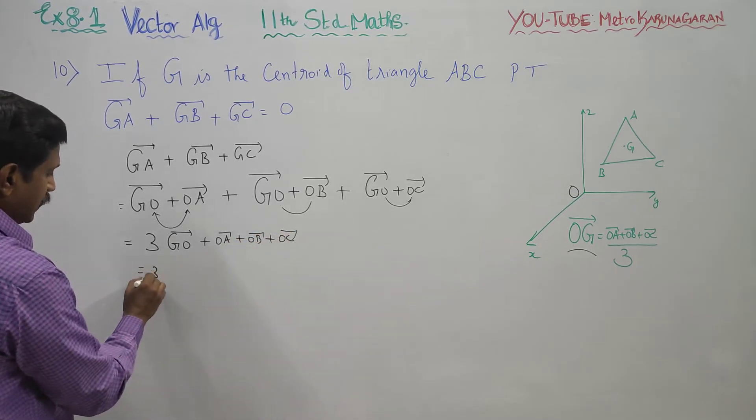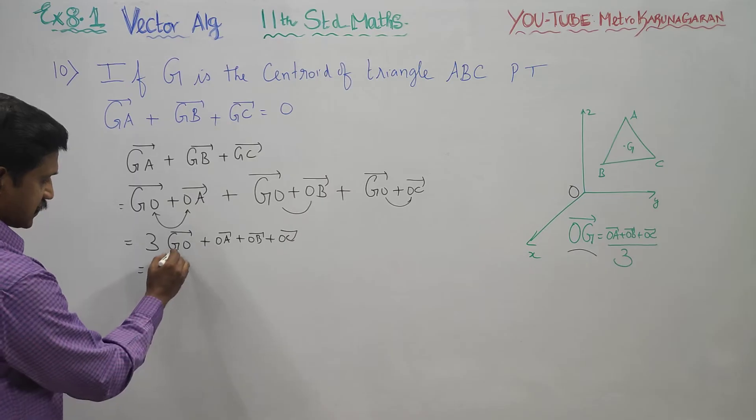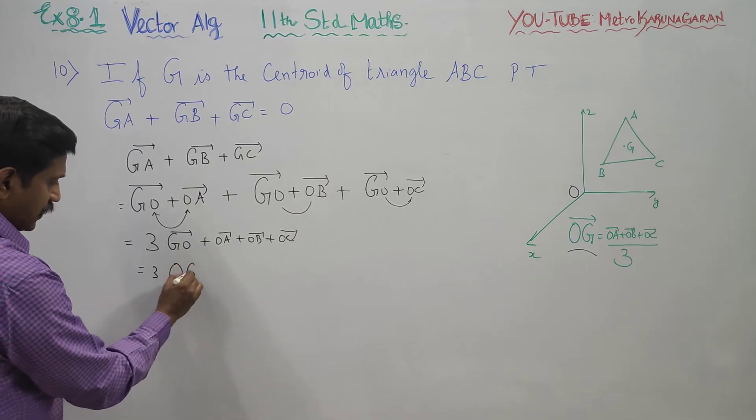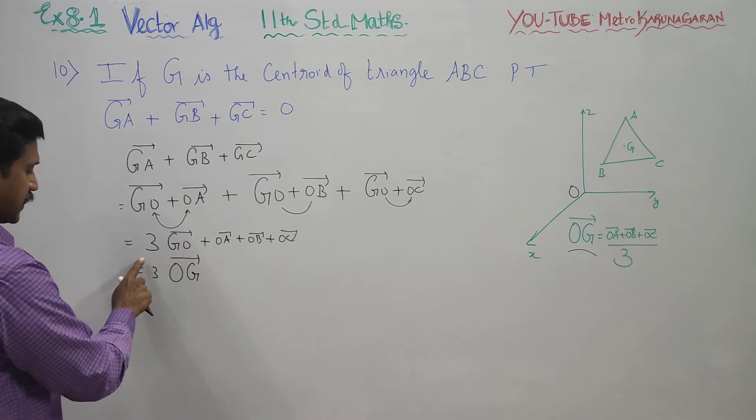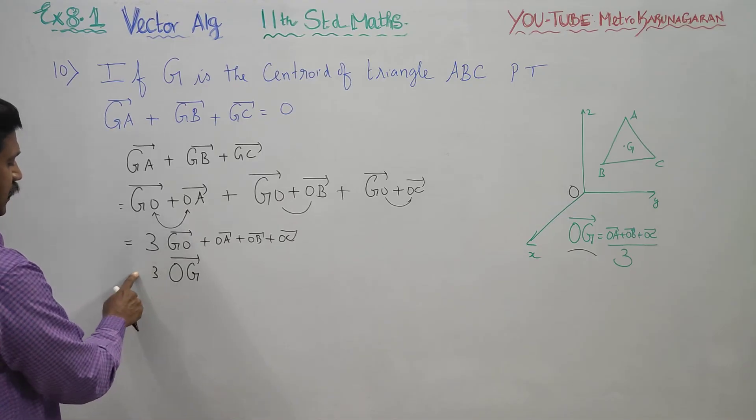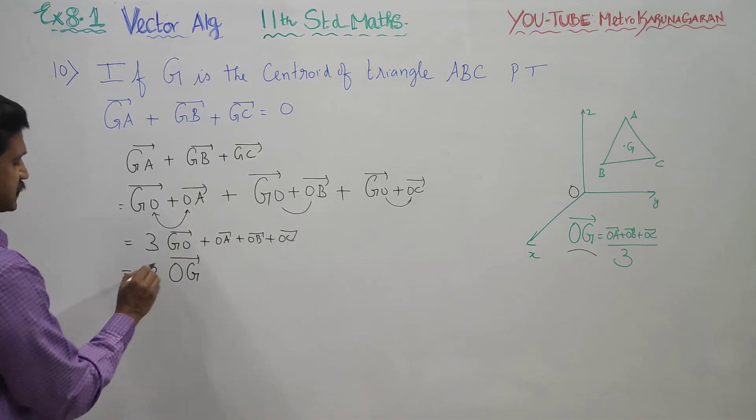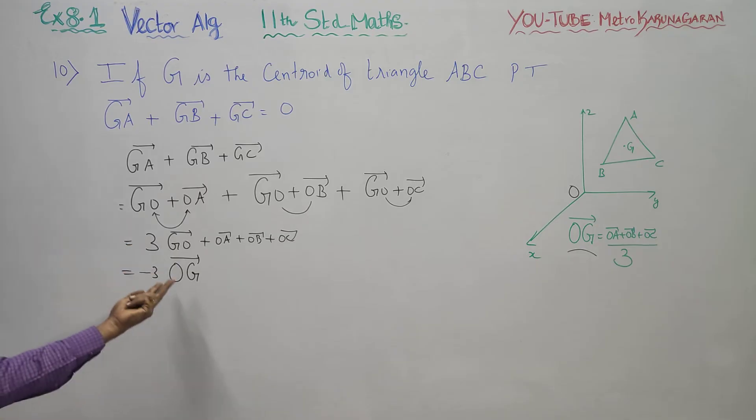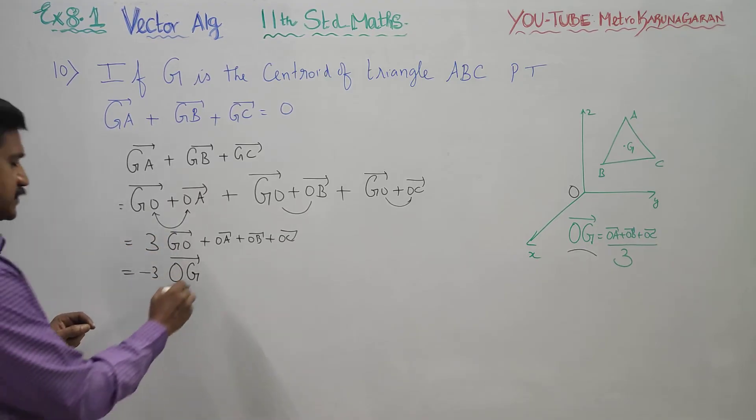We know that GO can be written as the reverse of OG. When we change the direction, GO equals negative OG vector.